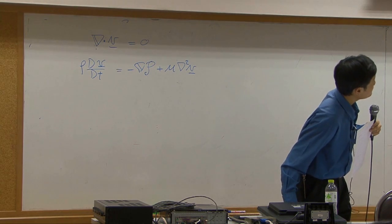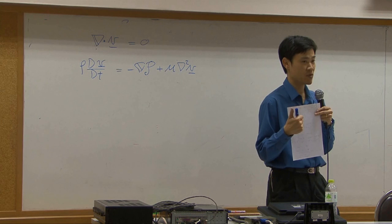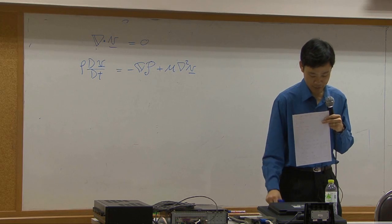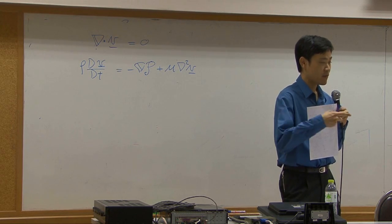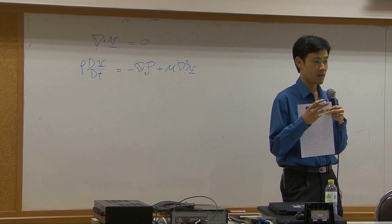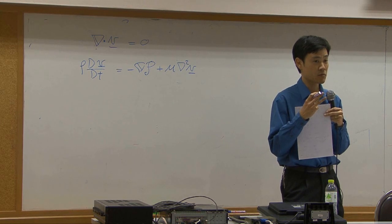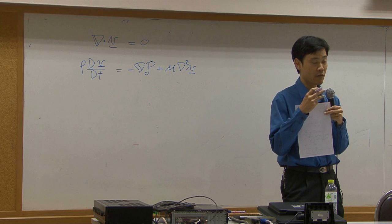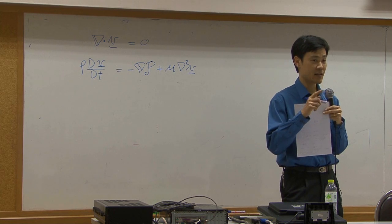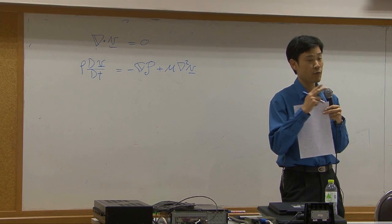Since we have some time left, I'm going to discuss something else. In the handout, I give you another example where the fluid velocity is a function of two variables. So far, all the examples I gave had velocity as a function of only one variable — either r, θ, or z, or either x, y, or z. You have never experienced velocity as a function of two variables.